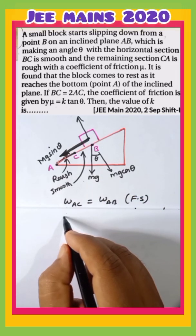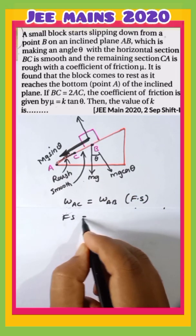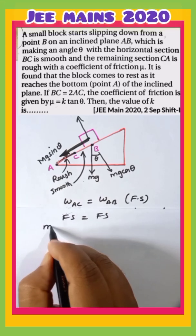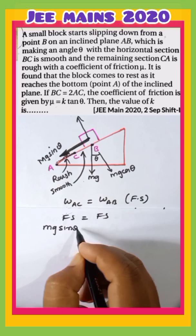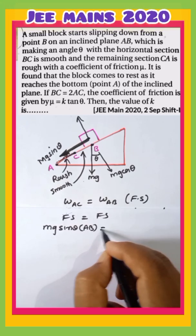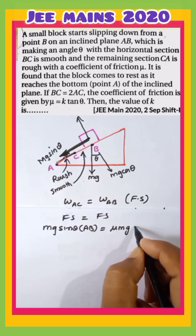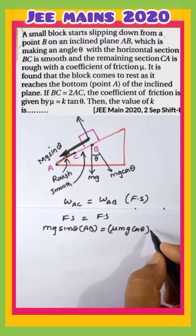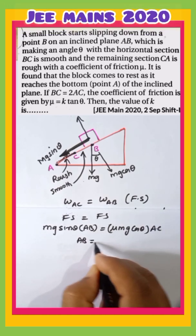Today we will start one problem which is given in 2020. If you observe the slope, it's a rough surface given there, and work done on the rough surface is equal to work done on the smooth surface. Work done is nothing but force into displacement. Smooth surface means mg·sinθ into displacement AB, and rough surface means μ·mg·cosθ into displacement AC.